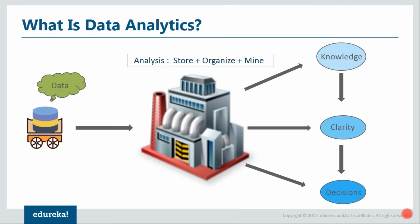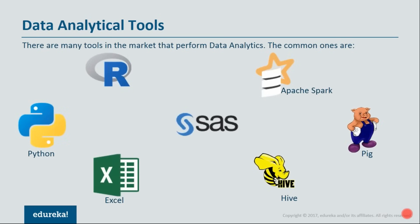Now that we've taken a look at what data analytics is, let us take a look at a few important tools that are trending in the market. All these tools help you do data analytics. I've mentioned a few popular ones only because there are a lot of tools, but we would be focusing on few important ones. We have R and Python — these are open source statistical programming languages. Both have their different capabilities and are very popular in the market. They're available freely, so anybody can download them and start analyzing data.